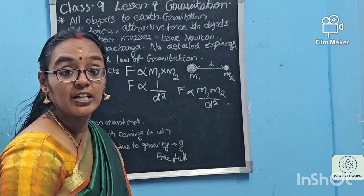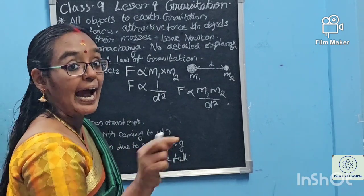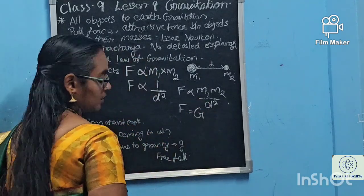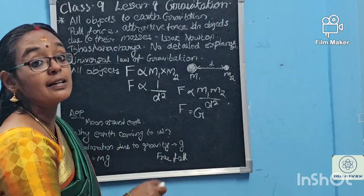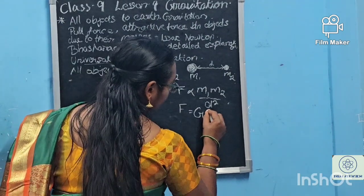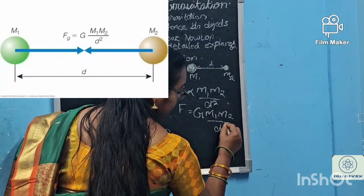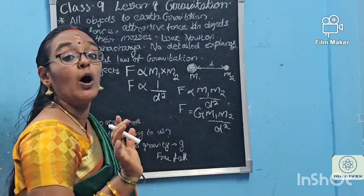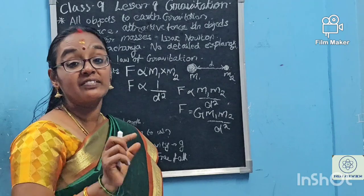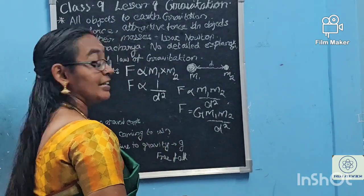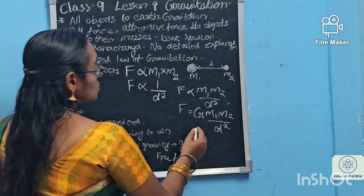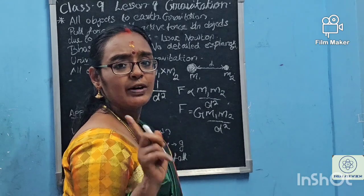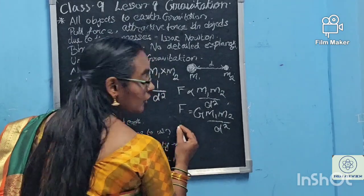To remove the proportionality, we add the universal gravitational constant G. So F = G·M1·M2 / D². Every object attracts another object. What is the SI unit of F? Force always has only one SI unit — Newton.